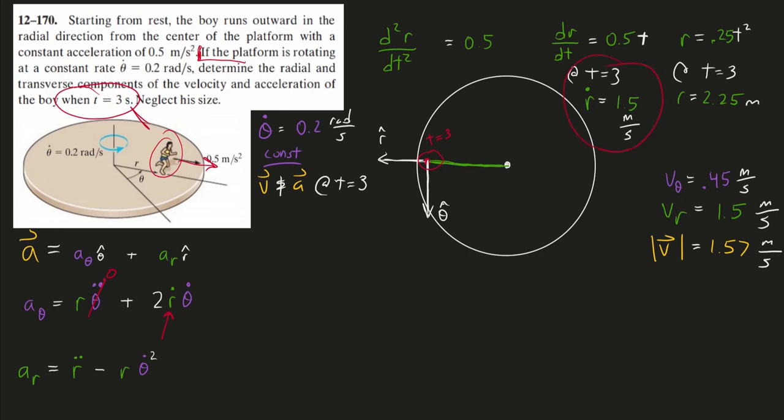The rate of change of my radius at this instant, we know that's 1.5. The constant angular speed is 0.2. I can plug in all these numbers and we'll get 0.6 meters per second squared.